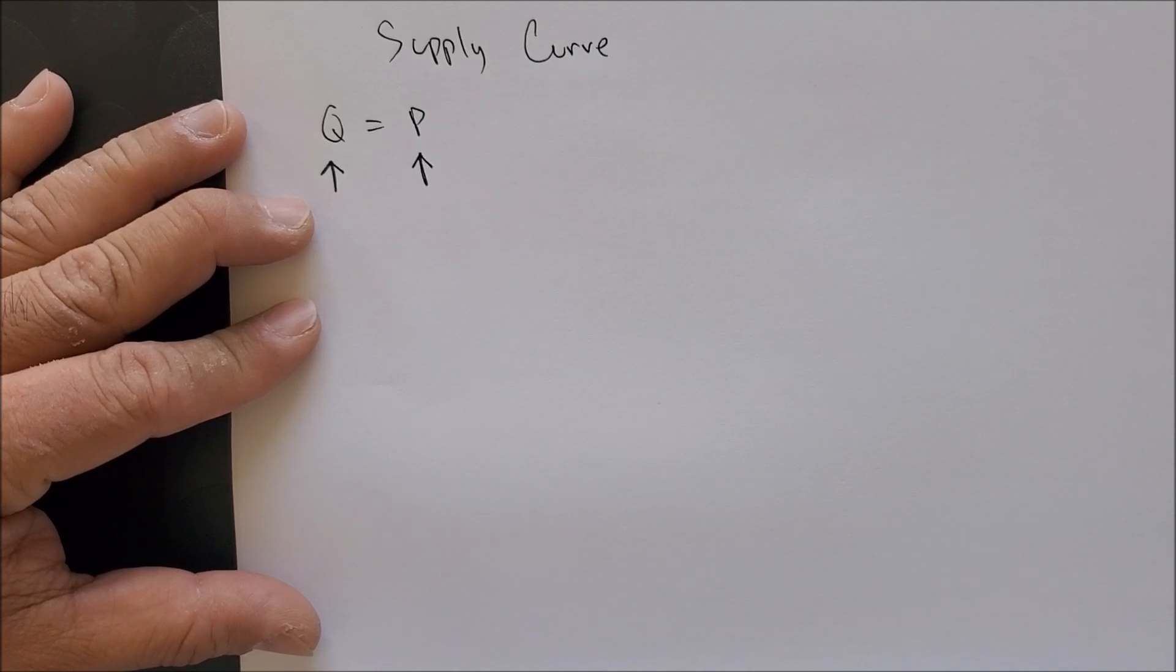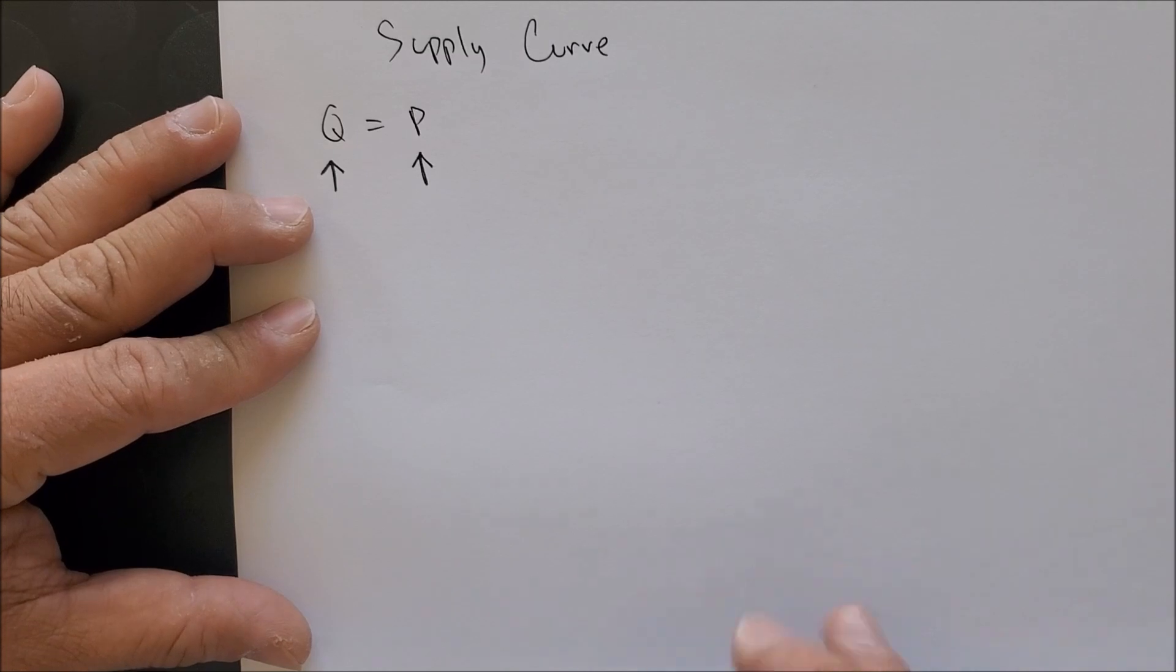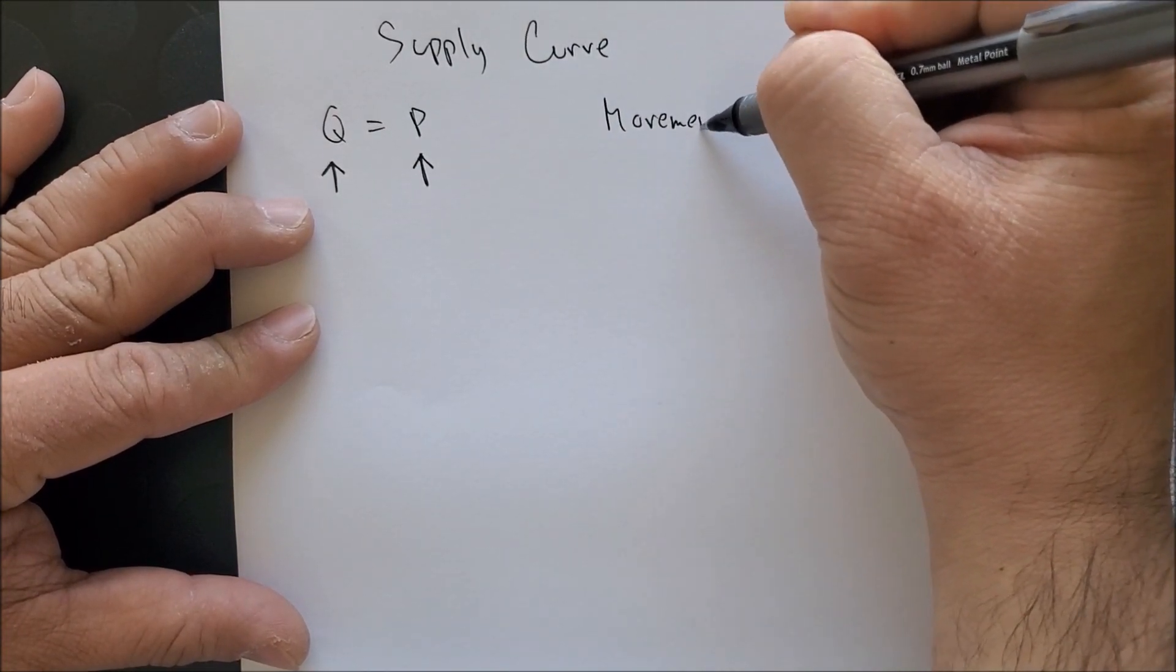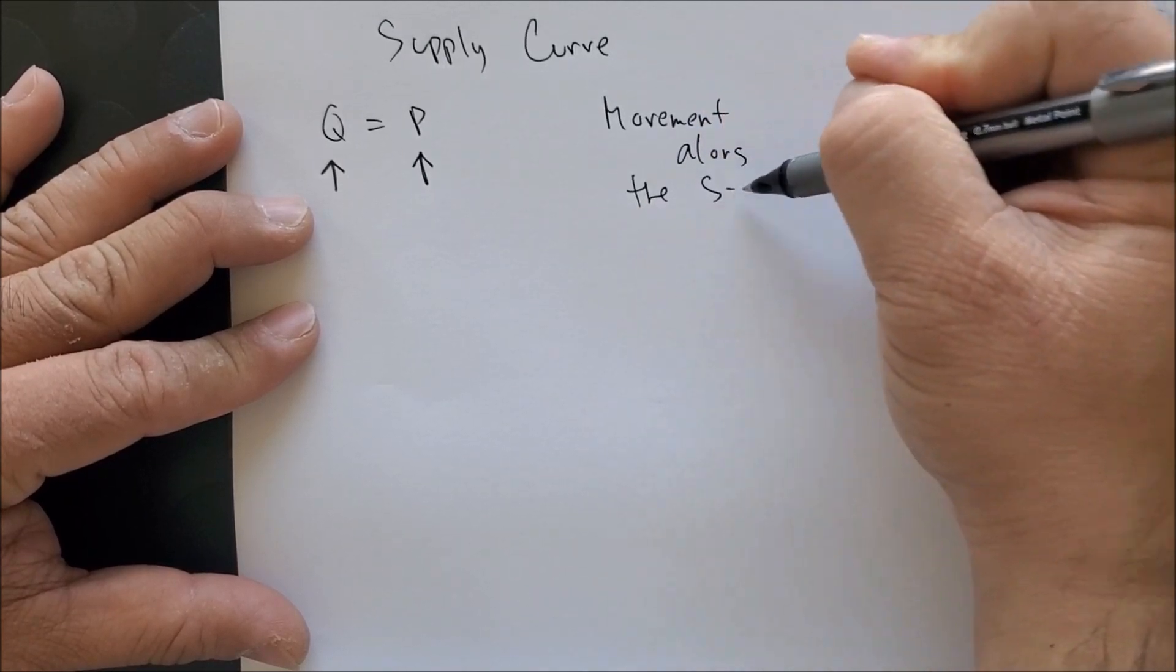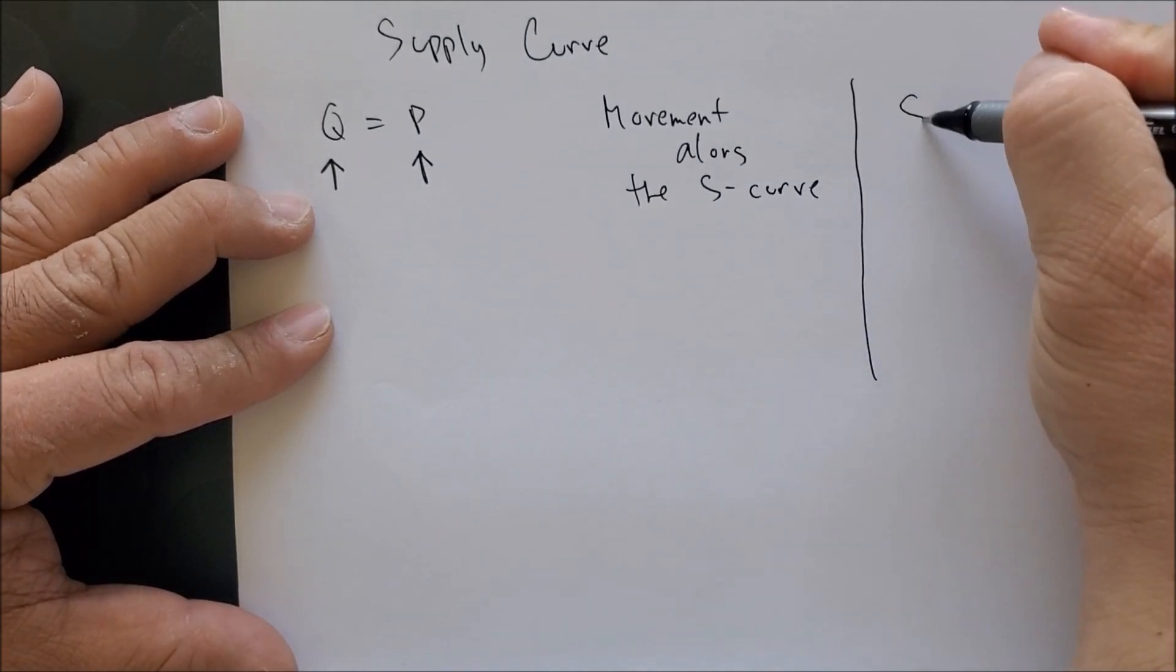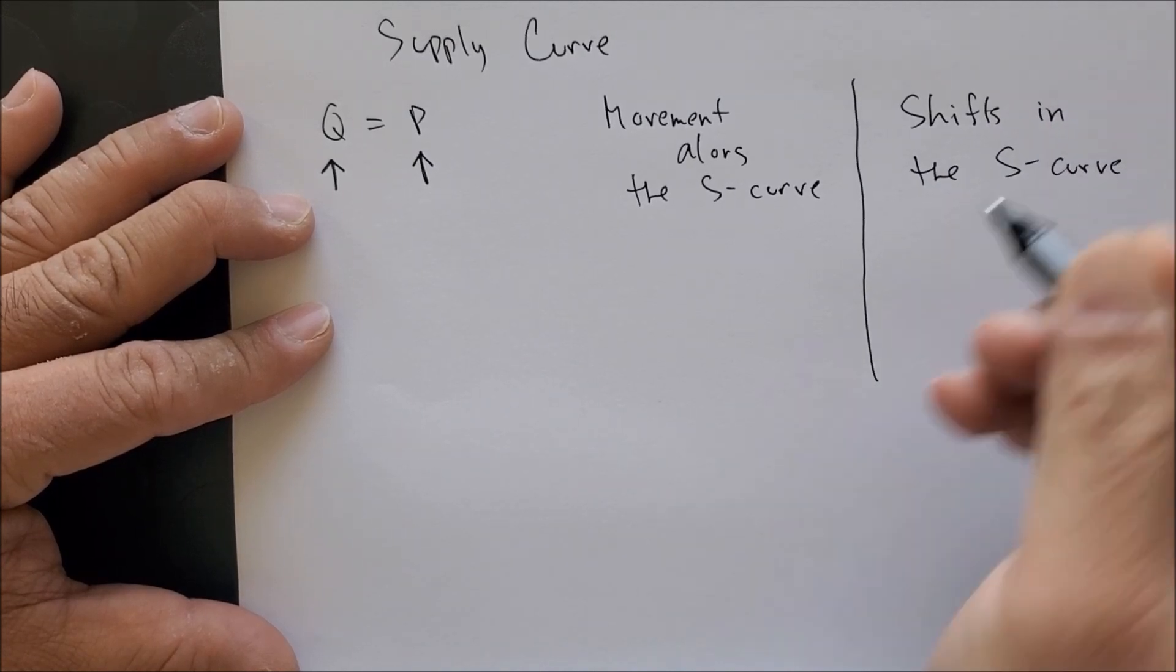Like the demand curve, we can also illustrate on a graph what happens when there is a price change and what factors would shift supply either to the right or to the left. We can label this portion as a movement along the supply curve and shifts in the supply curve.